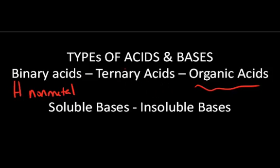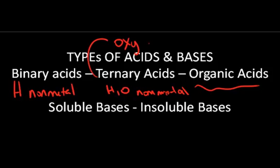Ternary acids are made of three elements: hydrogen, oxygen, and some other non-metal. Ternary acids can be monoprotic, diprotic, polyprotic, and sometimes they're also called oxy acids because they contain oxygen.